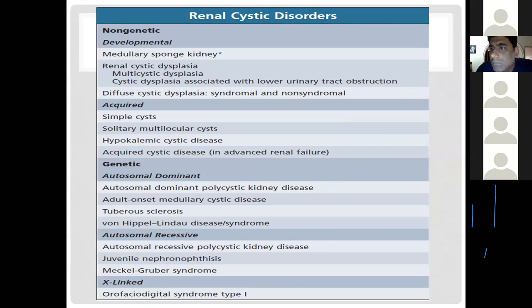Less common conditions include tuberous sclerosis and juvenile nephronophthisis. There are many disorders in this category, but you need only to go through the names of these disorders; the more important ones will be discussed in slight detail.